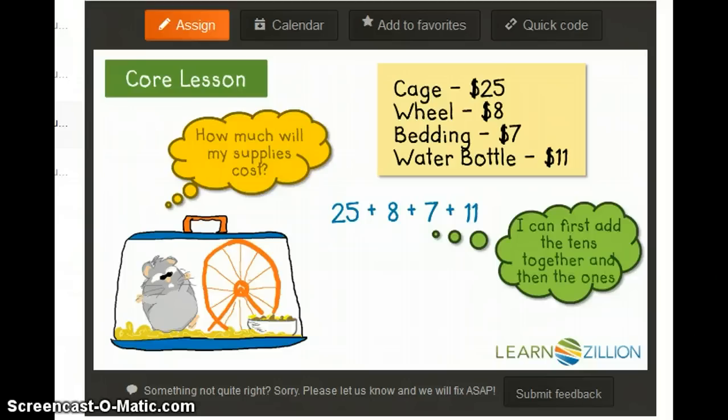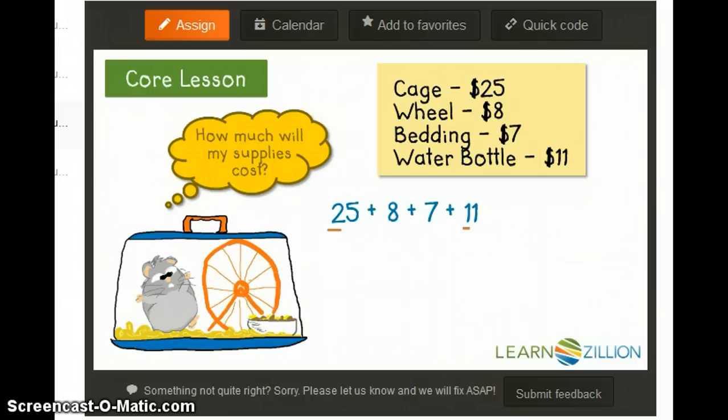Remember, we can first add the tens together and then the ones. So I will add 20 plus 10. There are no tens in 8 and 7, and 20 plus 10 equals 30.